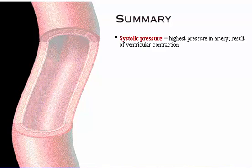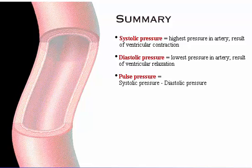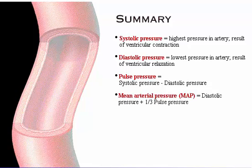Here's a summary of what we've covered. Systolic pressure is the highest pressure in an artery; it is the result of ventricular contraction, or systole, pushing blood into the aorta and through the arteries. Diastolic pressure is the lowest pressure in an artery, resulting from ventricular relaxation, or diastole. Pulse pressure equals systolic pressure minus diastolic pressure. Mean arterial pressure, or MAP, equals diastolic pressure plus one-third of the pulse pressure.